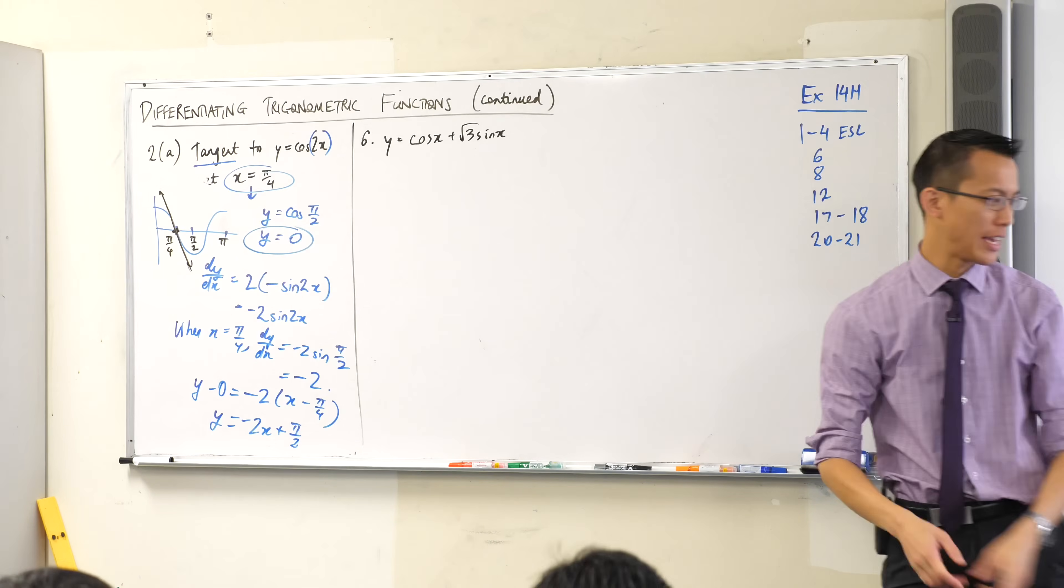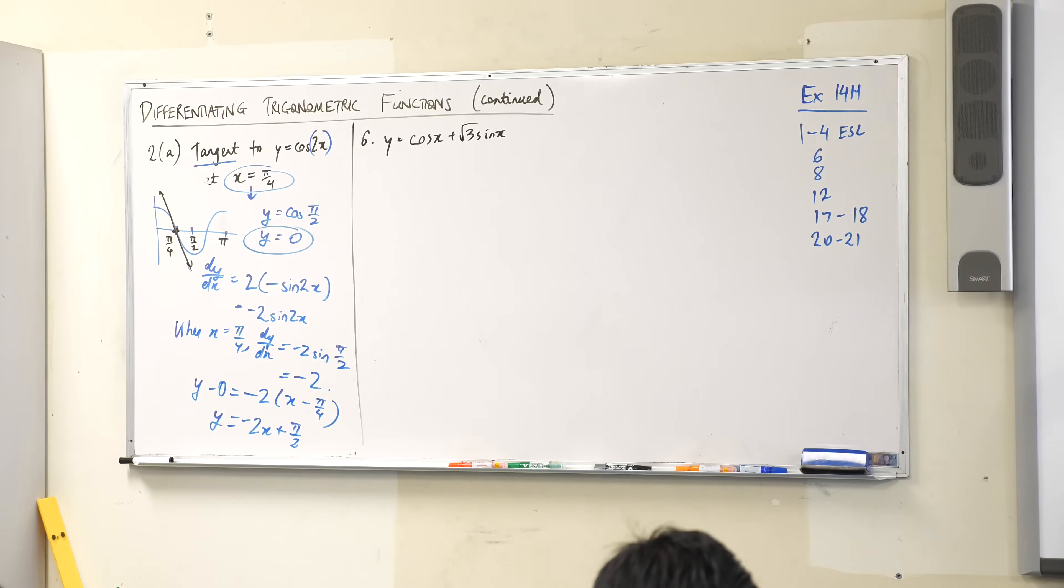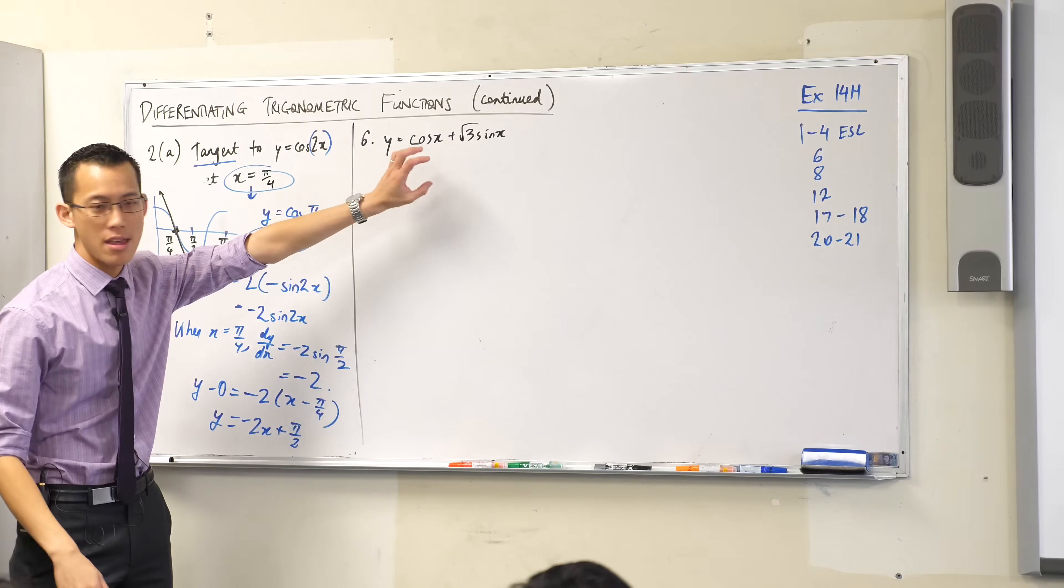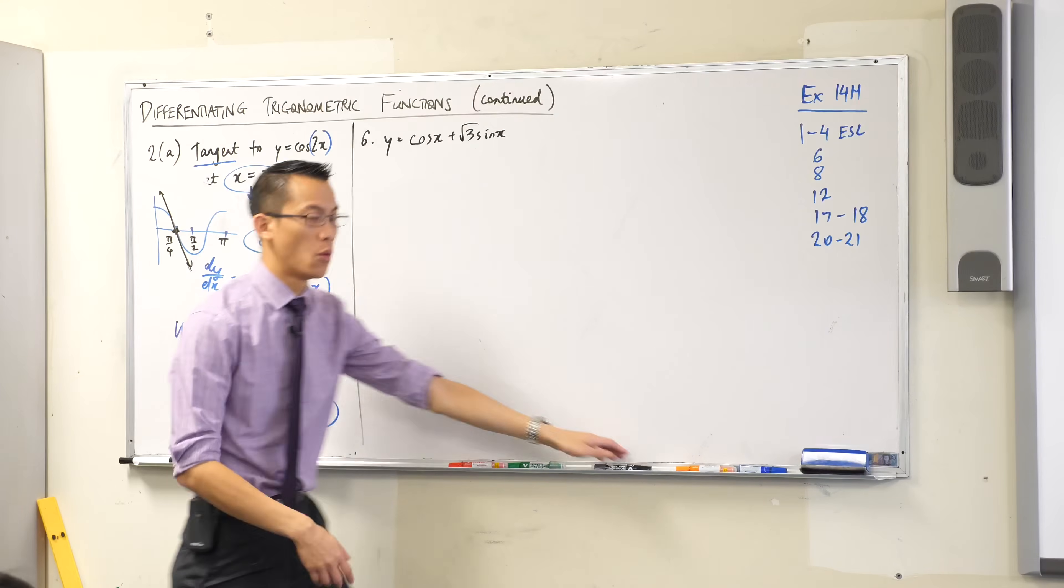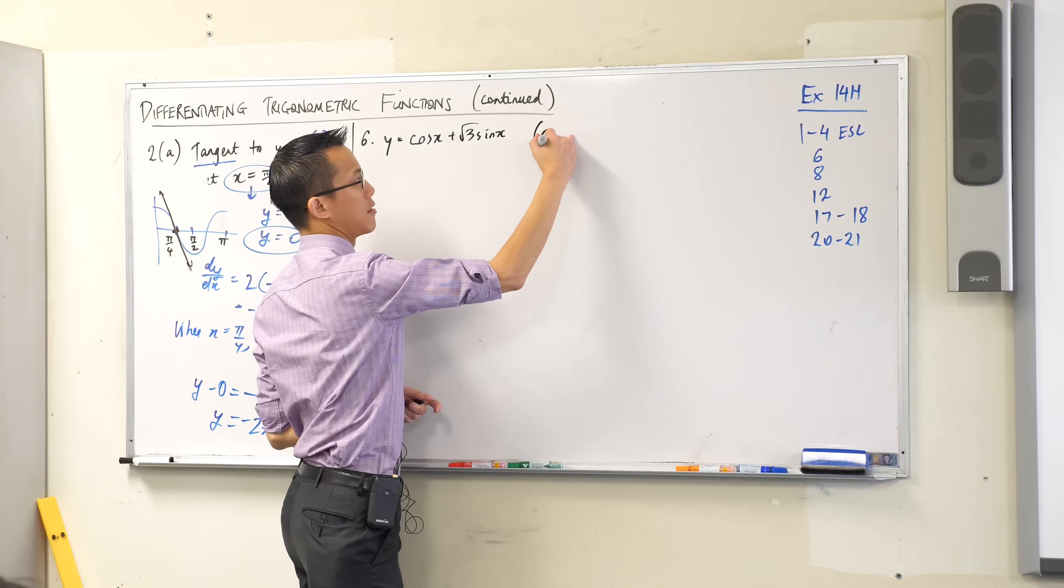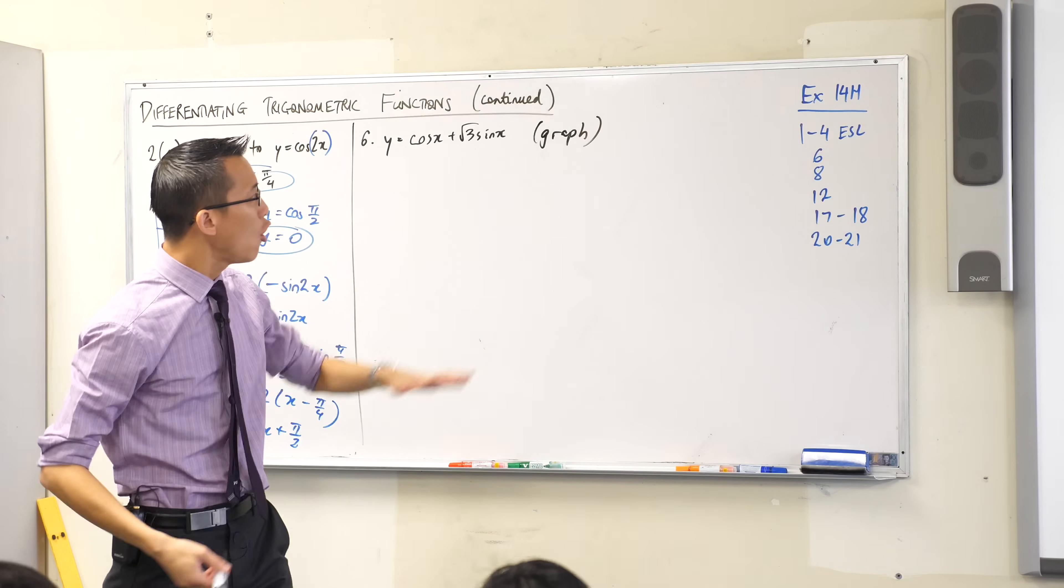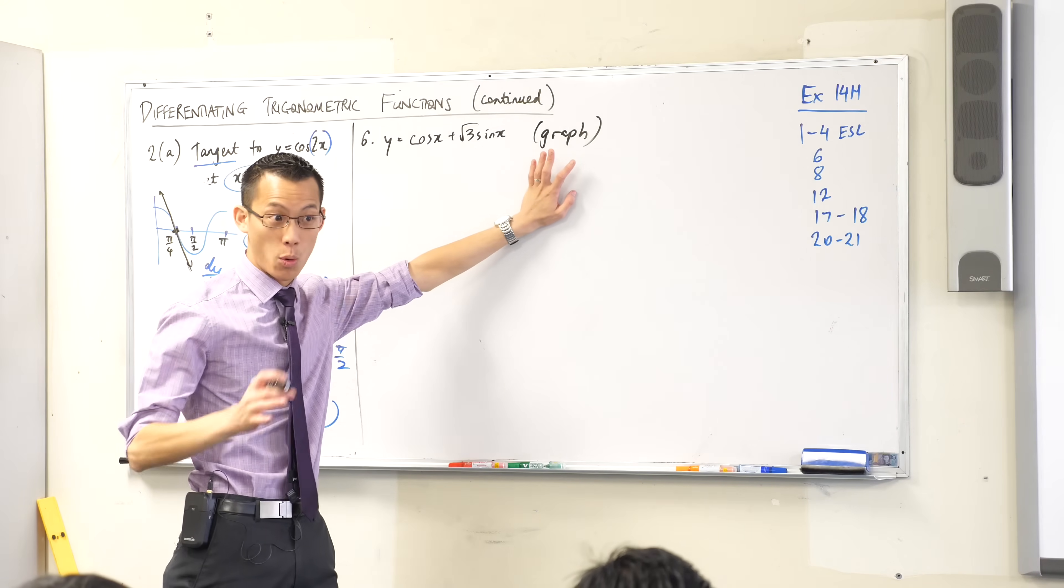Now question six in the textbook, it actually scaffolds it a lot for you. There's like a part A, a part B, a part C, I think, but I actually just want you to think with me if the question for this was just graph. If that's all you were told and there was no scaffolding, okay, on a normal graph what kind of information is important to put on it?